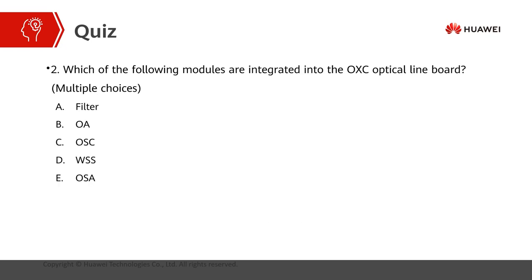The second question is a multi-choice question: which of the following modules are integrated into the OXC optical line board? The OXC optical line board integrates the FRU (also called the filter), optical amplifier, optical supervisory channel, and the WSS module. So the correct answer is A, B, C, D. We do not select E (optical spectrum analyzer) as it is not integrated. The answer is A, B, C, D.